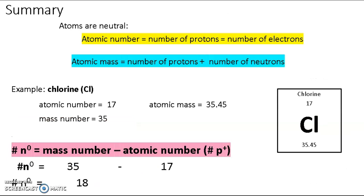To summarize, we know that atoms are neutral, which means the atomic number of an atom equals the number of protons, which also equals the number of electrons. Atomic mass is the number of protons plus the number of neutrons.